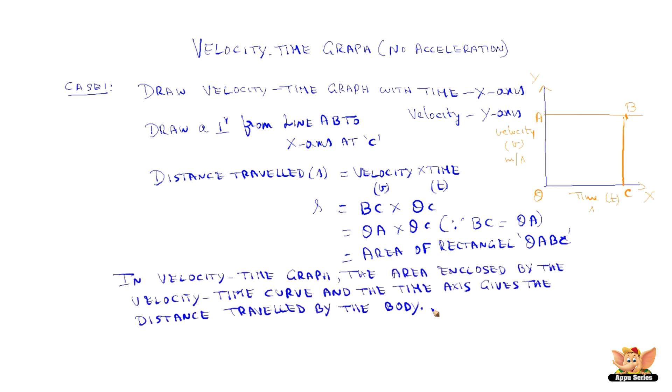From this we can say that in velocity time graph, the area enclosed by the velocity time curve and the time axis gives the distance travelled by the body. In this case, the area enclosed by the velocity time curve AB and the time axis OC is the area of rectangle OABC.